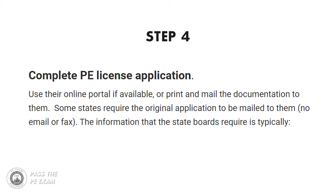Step four: complete your PE license application. Now you have to complete your application. Use your state's online portal if available, or print and mail the documentation to them. Some states require the original application to be mailed to them, not by email or fax. Let me quickly run through the information that the state boards typically require on the application — again, this is for most states, not all of them.